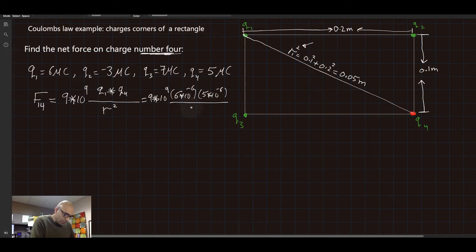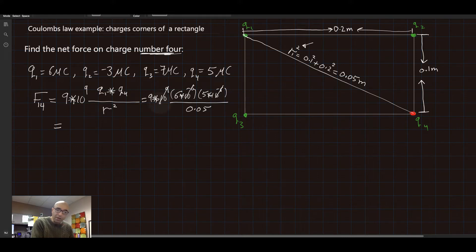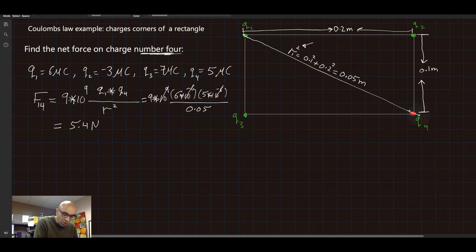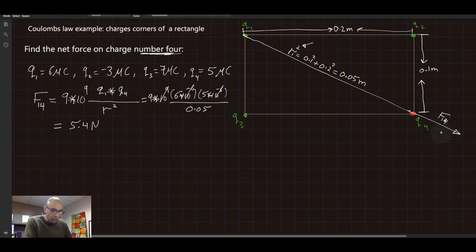Plugging in 0.05 for R squared: the exponents give ten to the minus twelve combined with ten to the nine, yielding ten to the minus three. Using the calculator, F1 on 4 equals 5.4 Newtons. For the direction: since both Q1 and Q4 are positive, they repel, so Q1 pushes Q4 along the line connecting them, away from Q1. That is the direction of F1 on 4.